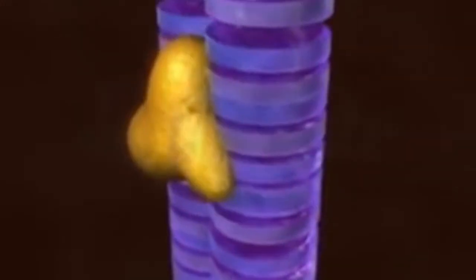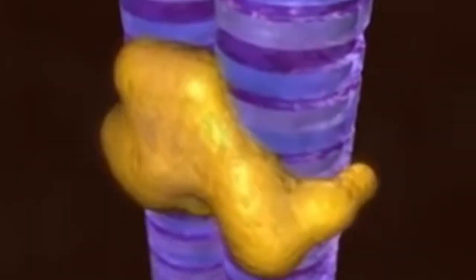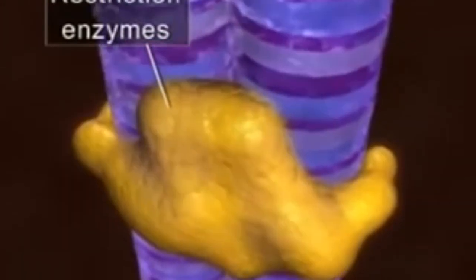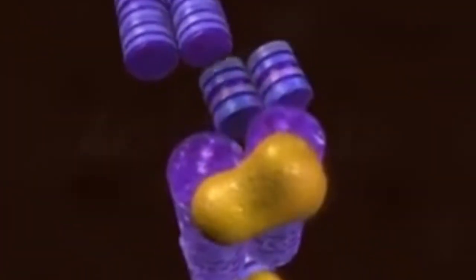DNA is isolated by using restriction enzymes and then cut into fragments. These are the restriction enzymes. They are cut into fragments.